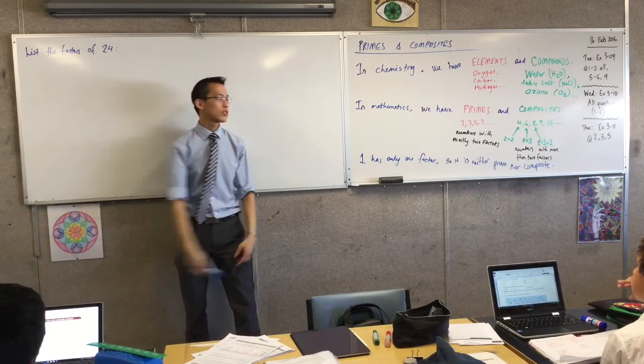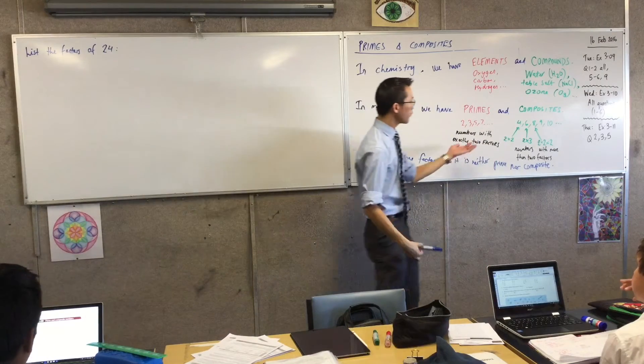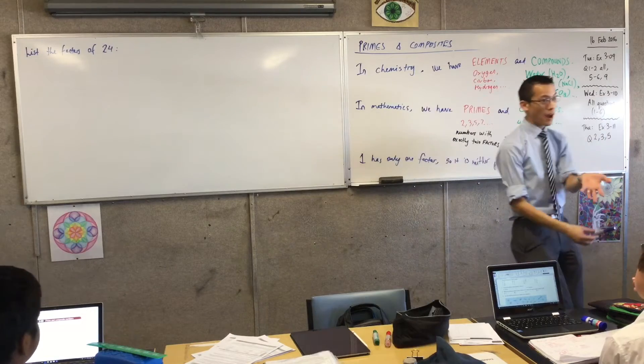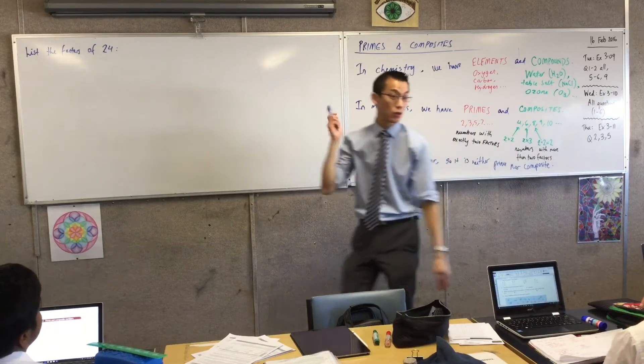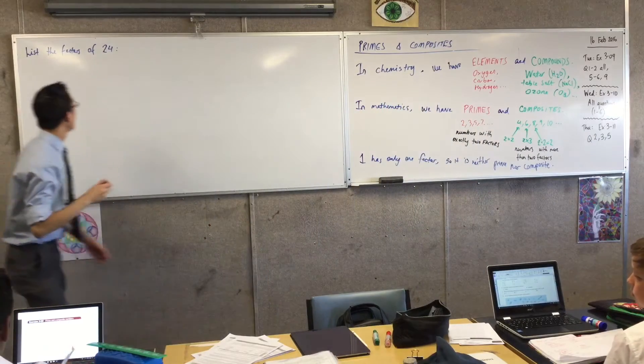When you get through this question, you're listing factors, right? We're looking for numbers that I can divide by and have no remainders out. That's what a factor is. Like, what kind of groups can I split 24 into?